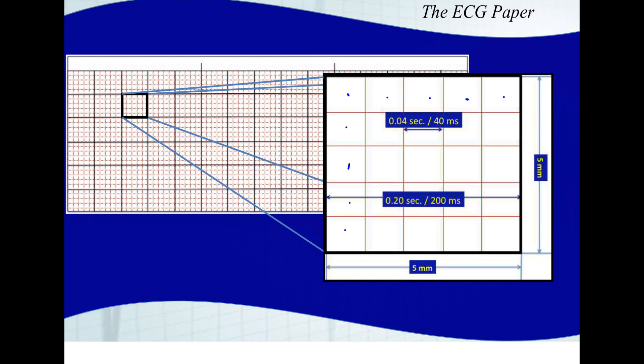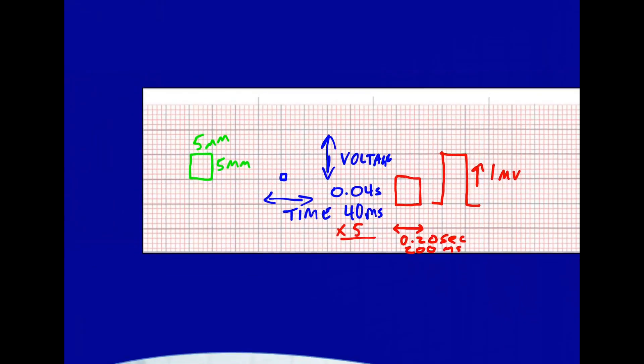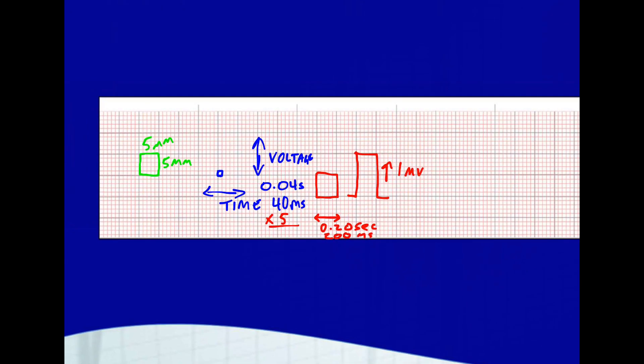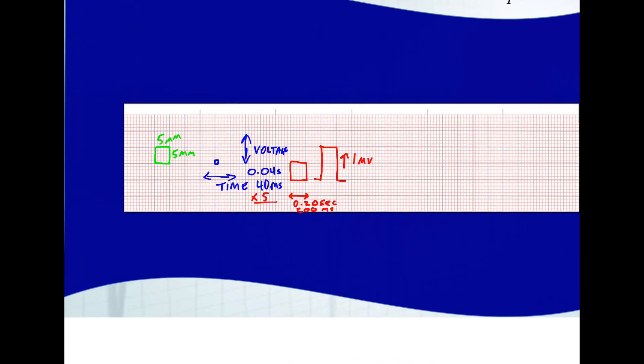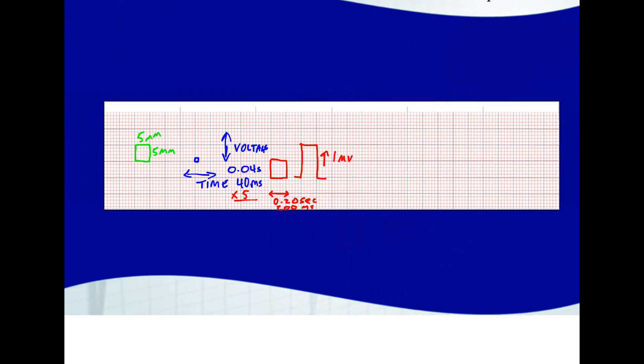A large box is five millimeters by five millimeters, meaning every small box is one millimeter. Going back to this large piece of paper, I said it was six seconds. How did I get that? If every large box is 0.20 seconds, then one second will be five large boxes.